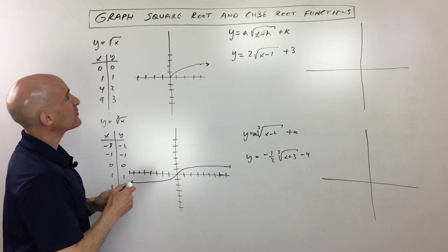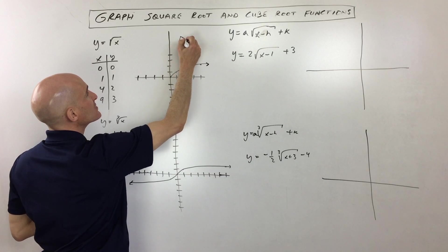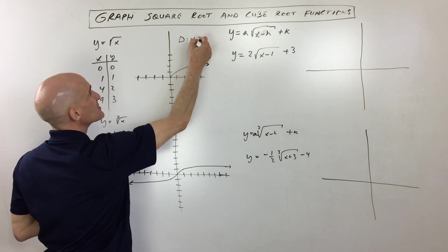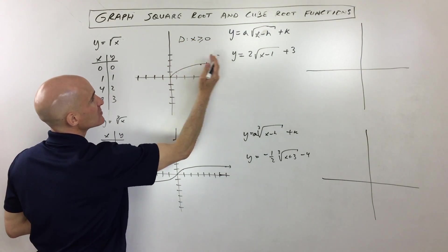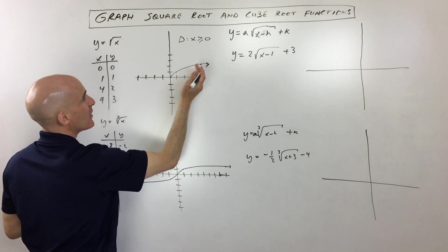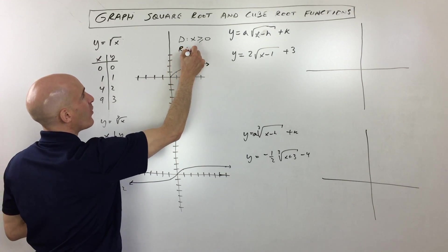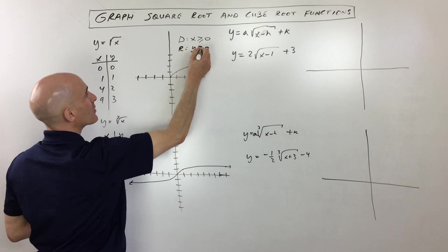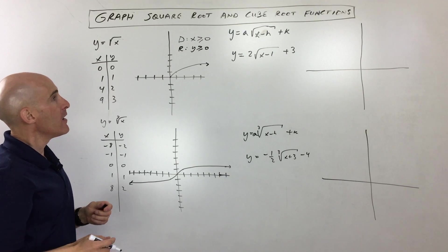So if you want the domain of this graph, the domain is going to be x is greater than or equal to zero — so the domain is the x values — whereas the range, the y values, are also greater than or equal to zero.